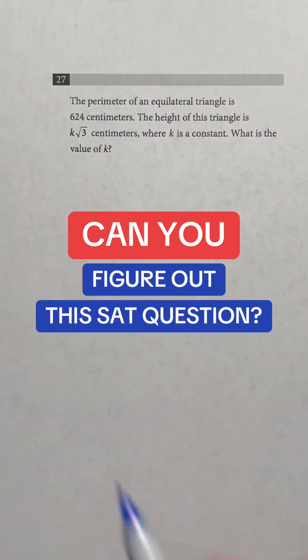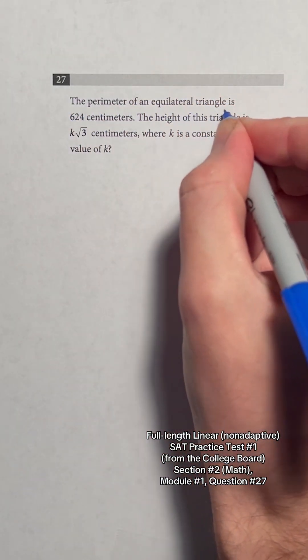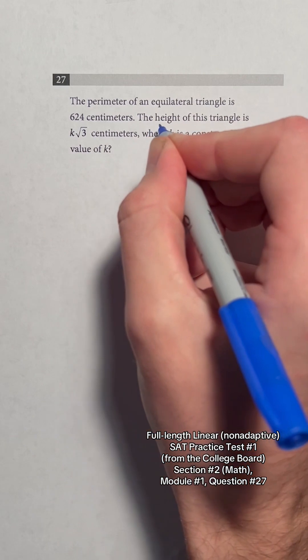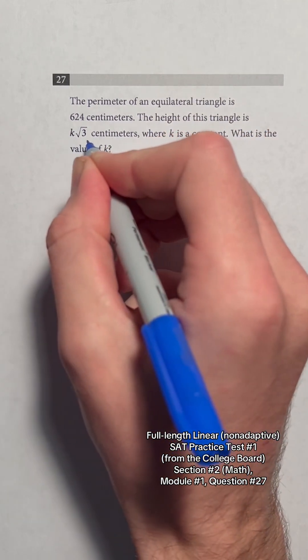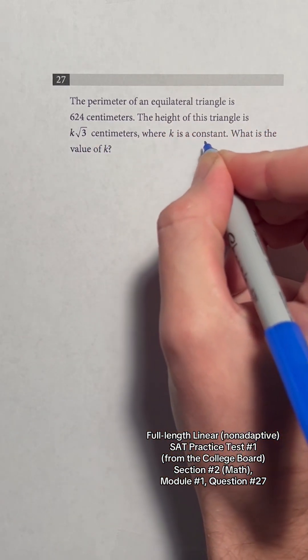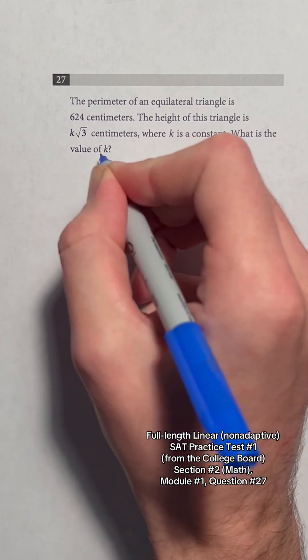Can you figure out this SAT question? The perimeter of an equilateral triangle is 624 centimeters. The height of this triangle is k times the square root of 3 centimeters, where k is a constant. What is the value of k?